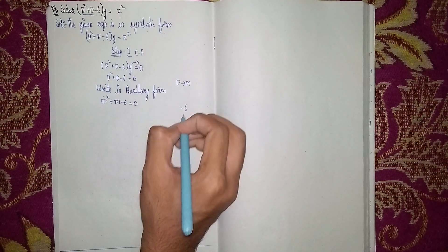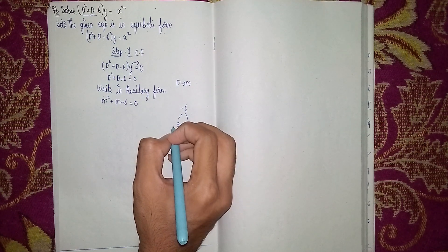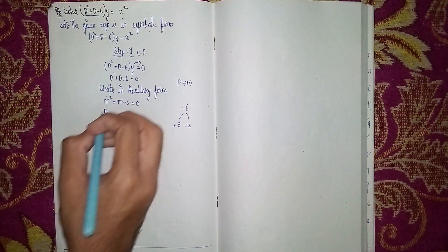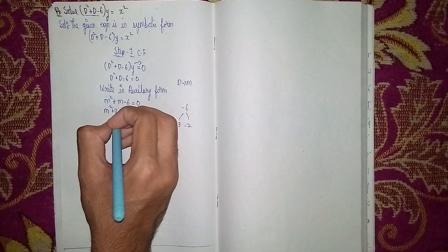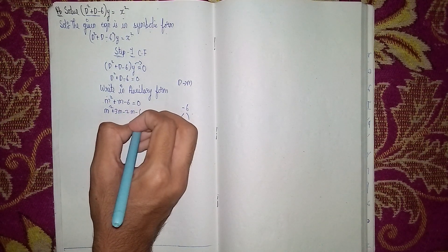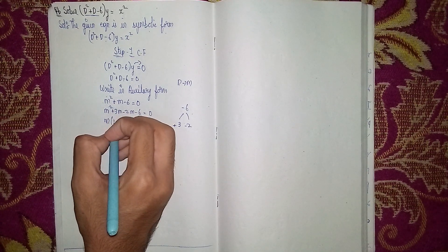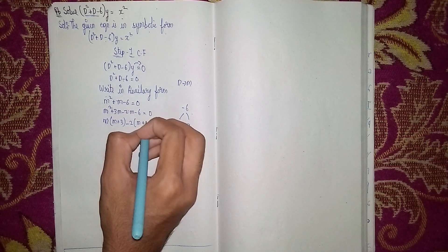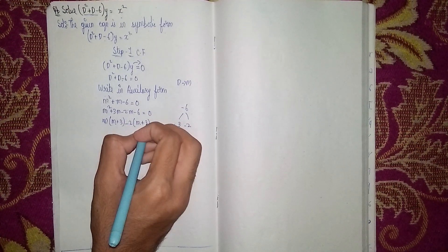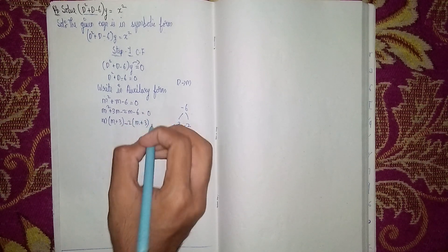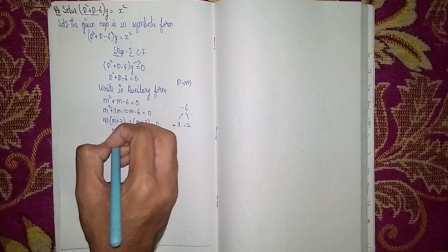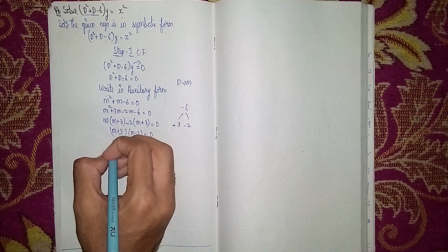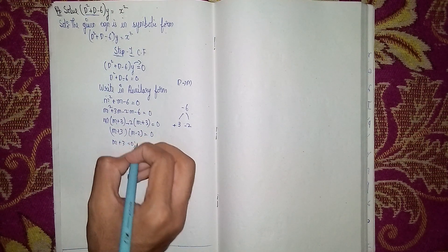Using middle term splitting: -6 = +3 × (-2), and +3 + (-2) = +1. So it becomes m² + 3m - 2m - 6 = 0. Taking m as common: m(m + 3) - 2(m + 3) = 0.